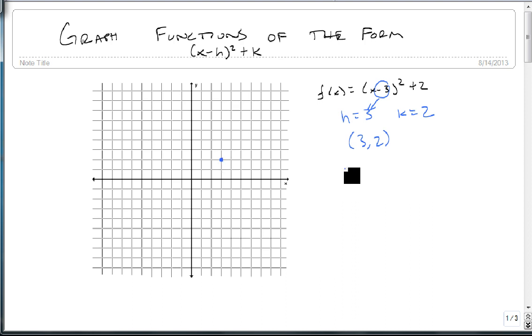Then remember we have a pattern of over 1, up 1, and then over 1 and up 3. So we can go over 1, up 1, and over 1, up 3, and these generate our perfect squares.